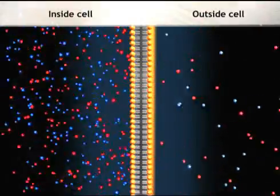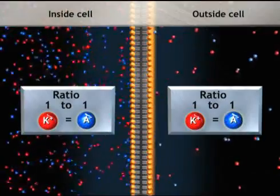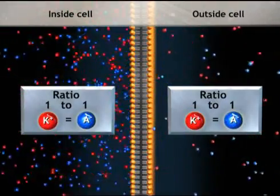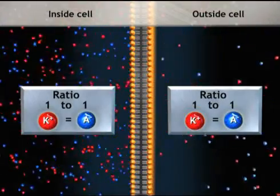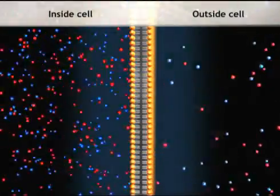And despite the difference in salt concentration, the ratio of potassium ions to anions on each side of the membrane equals 1, and the membrane potential is equal to 0 millivolts. The solutions are electrically neutral, so no charge accumulates on the inside or outside of the membrane.